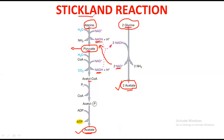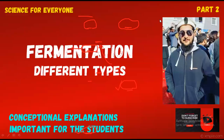So to summarize: proteins can also be fermented through the Stickland reaction, and sugars are fermented as well. Keep in mind the types of fermentation and that proteins can be fermented. This was today's lecture. If you have any questions, ask me in the comment box. If you haven't watched part one of the video, watch that first to be more clear about fermentation.